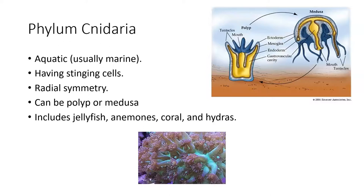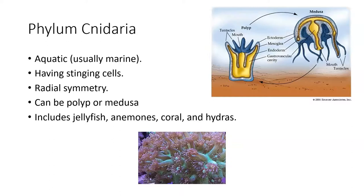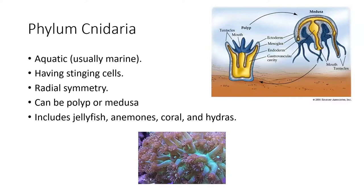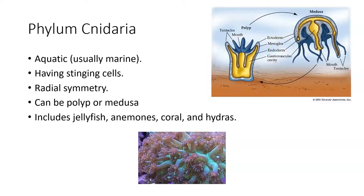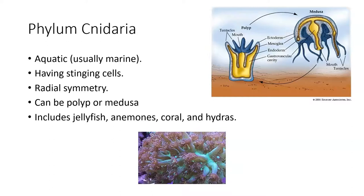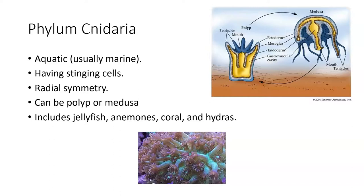Next, phylum Cnidaria: anything with tentacles you don't want to touch because it would hurt you goes into this group — corals, sea anemones, hydras, and jellyfish. These are mostly marine, though a few exist in fresh water. The tentacles have special stinging cells called cnidocytes. Their type of symmetry is radial — like a pizza shape, you can cut them in half in many directions. There are two basic body plans in Cnidaria: the polyp and the medusa.